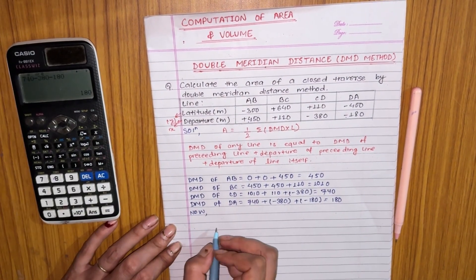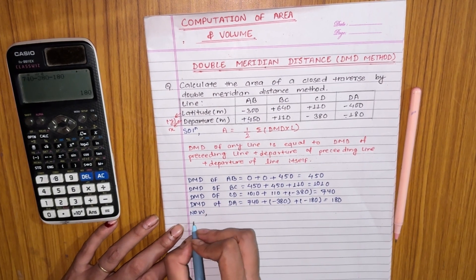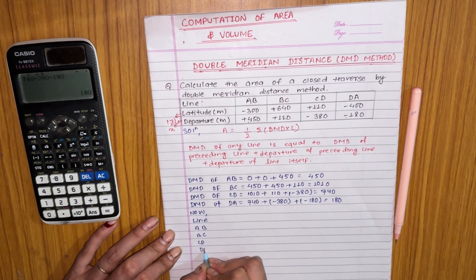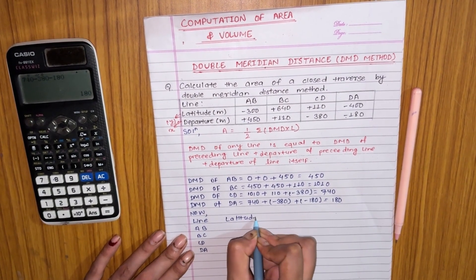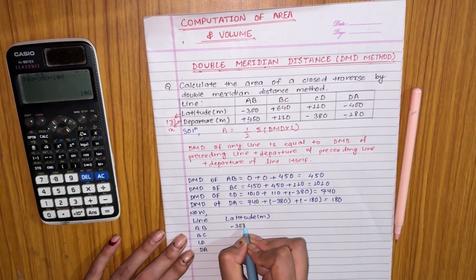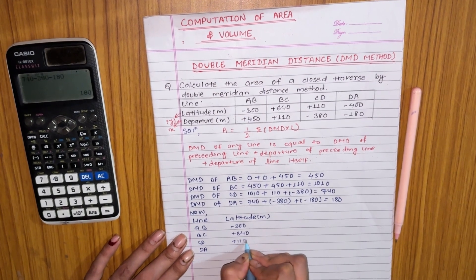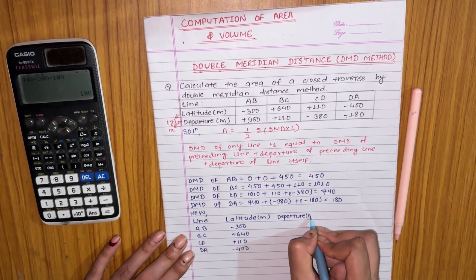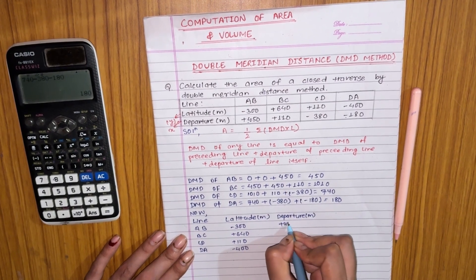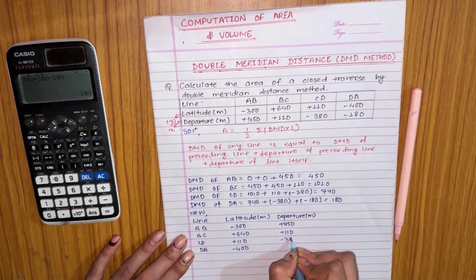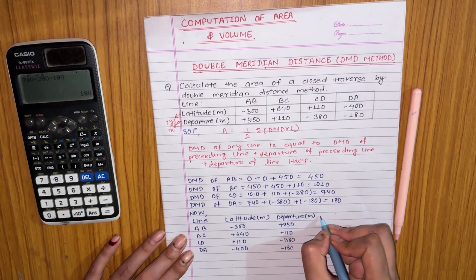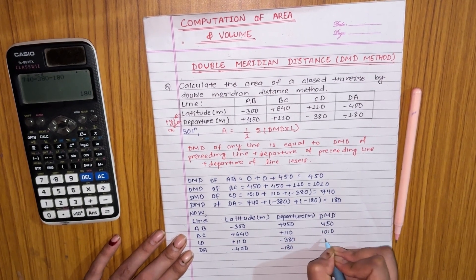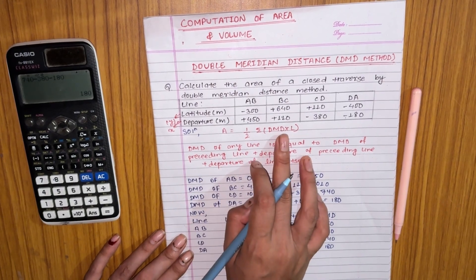Now we will draw a tabular form of all these lines and their DMD values. The lines are AB, BC, CD, and DA. The latitude column shows minus 300, plus 640, 110, and minus 400. The departure column shows plus 450, 110, minus 380, and minus 180. The DMD values are 450 for line AB, then 1010, 740, and 180.